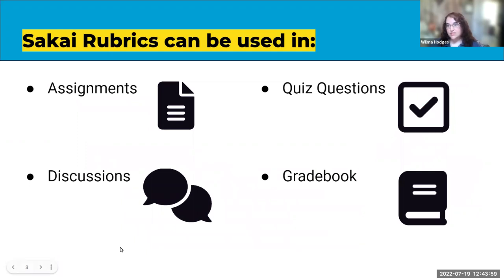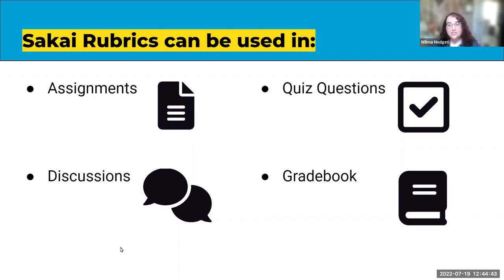Sakai rubrics can be used in the following tools: you can attach them to items in Assignments, and you can attach them to individual quiz questions. This includes open-ended question types like short essay responses, student file upload questions, or even student audio response questions where the student records an audio response. All of those can have rubrics attached for hand-scored question types in Tests and Quizzes.